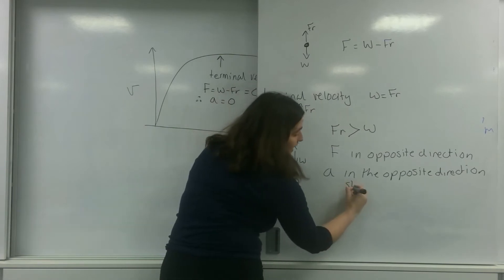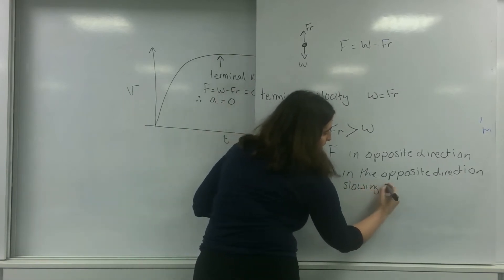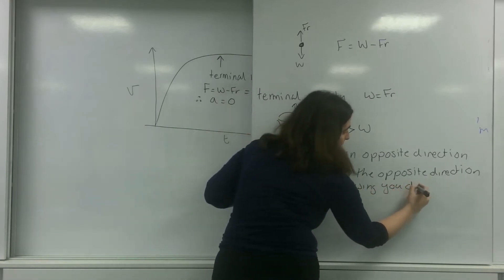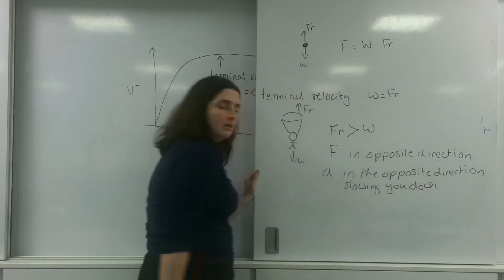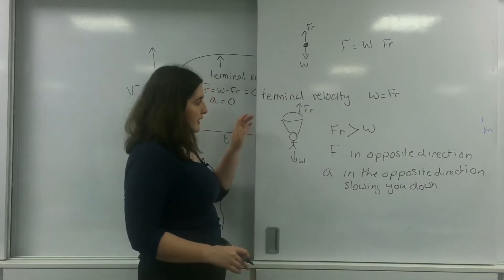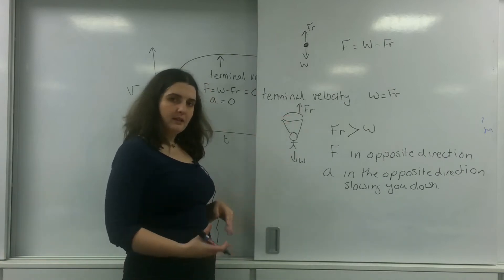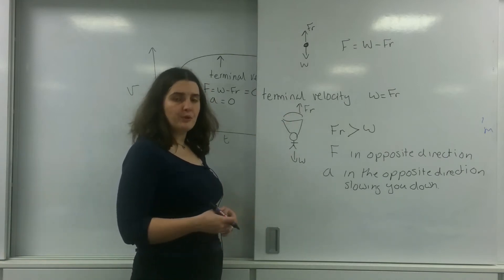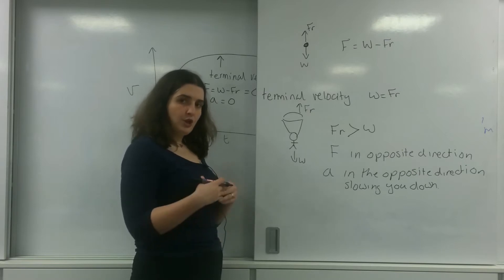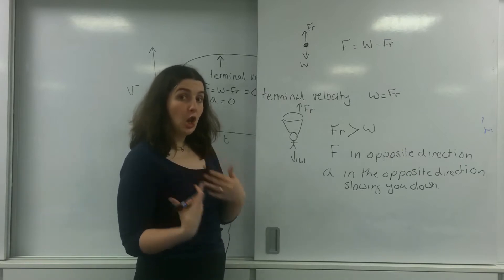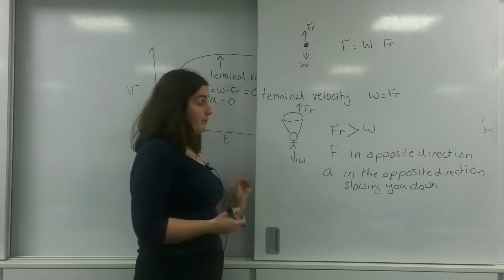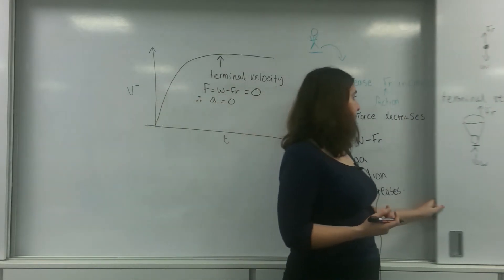So it is slowing you down. And then eventually, what would happen, you would slow down. This friction would balance out with the weight. And then you would get to a new terminal velocity. But that new terminal velocity will be lower than what would happen. So if I was going to graphically represent that here.